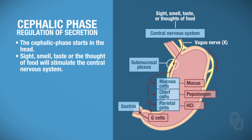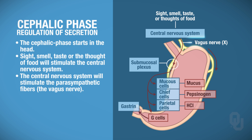Once the central nervous system is stimulated, that's going to stimulate the parasympathetic fibers—remember that's the vagus nerve, because we're dealing with the parasympathetic system. Action potentials will travel down that vagus nerve and then synapse with the neurons in the submucosal plexus. Remember, the submucosal plexus is in the submucosal layer of the gut wall.